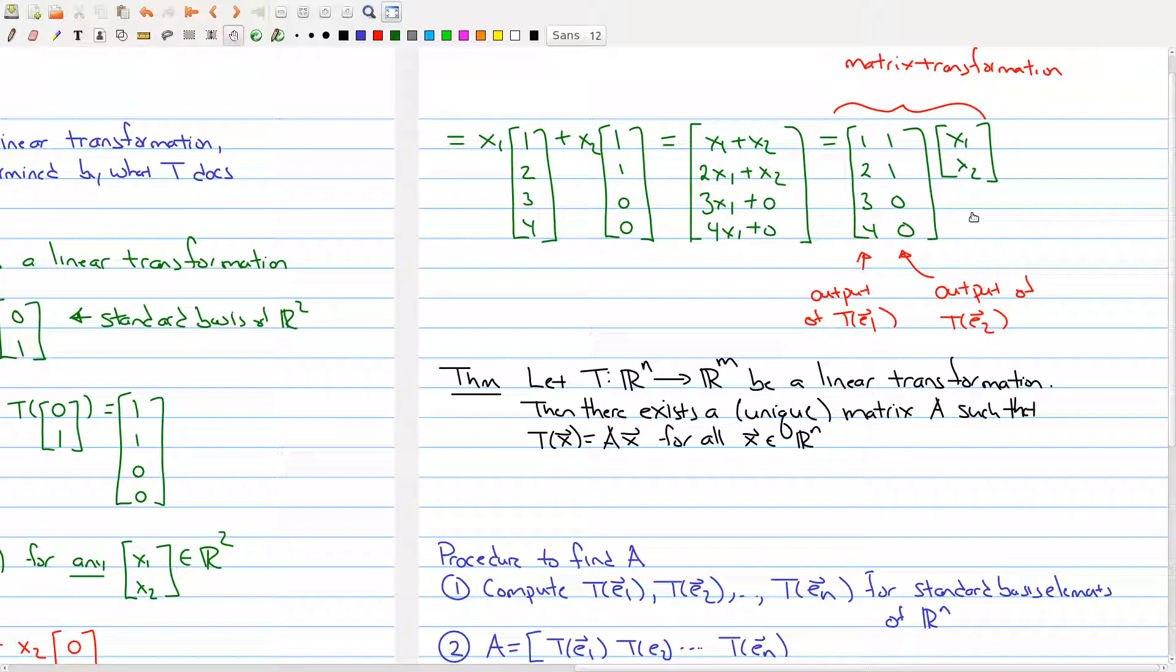And so that's what the next theorem is actually saying. That if you have a function from Rn to Rm that's a linear transformation, then there exists a unique matrix A that you can rewrite your linear transformation as a matrix transformation. So, i.e., every linear transformation is a matrix transformation. And in some sense, the theorem here fills in a gap from our last lecture, because we showed that every matrix is a linear transformation. And this now shows the reverse direction that every linear transformation is a matrix transformation.